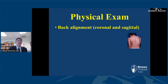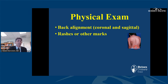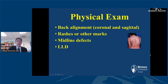On physical examination, we look at back alignment in both the coronal and sagittal planes. One child who came in with back pain and scoliosis had cafe au lait spots and in fact had type one neurofibromatosis. We look for rashes and midline defects such as hairy patches, which would suggest an underlying pathology in the spinal canal. We also look for a leg length discrepancy — a child with back pain and a significant leg length discrepancy could have a neurologic abnormality as the cause.